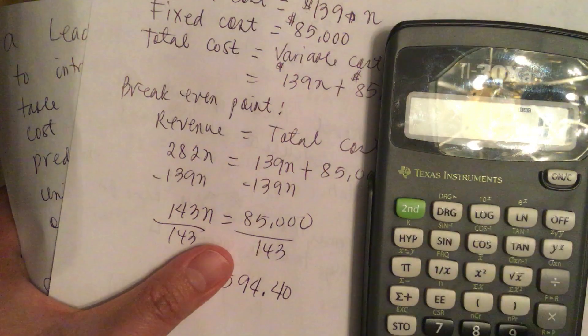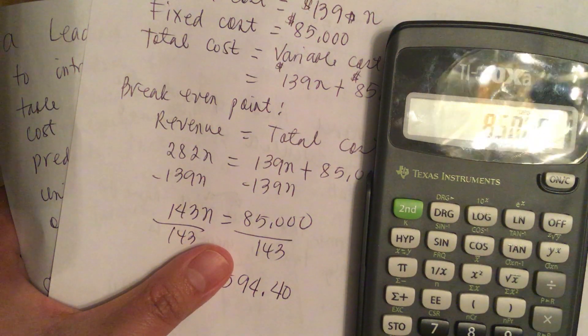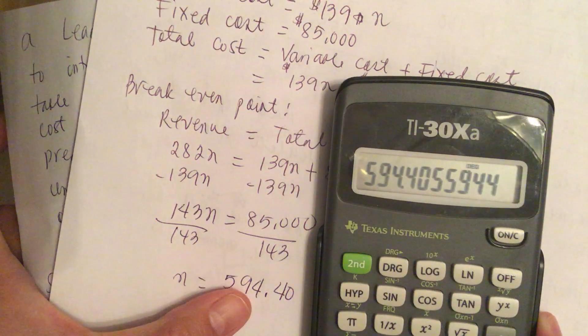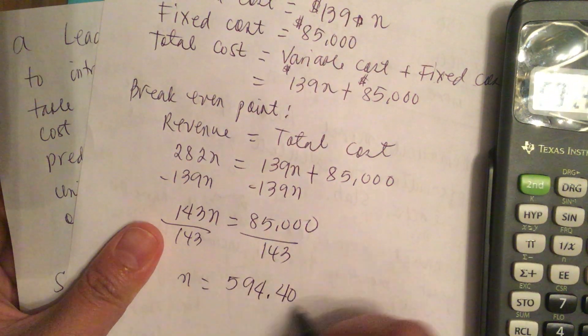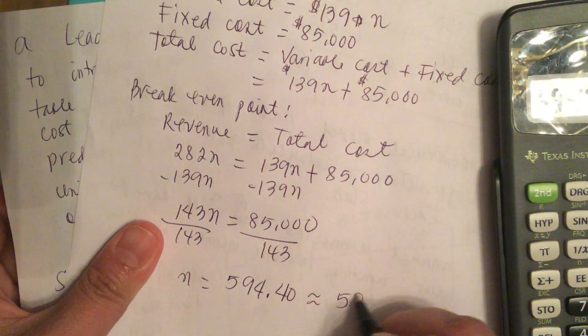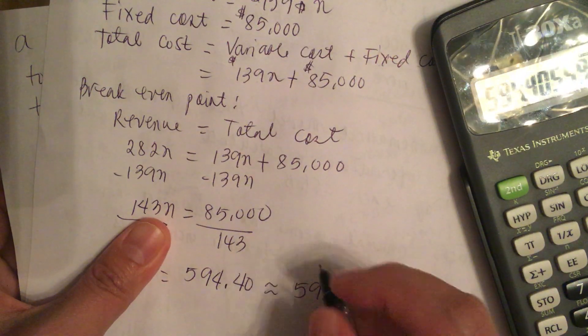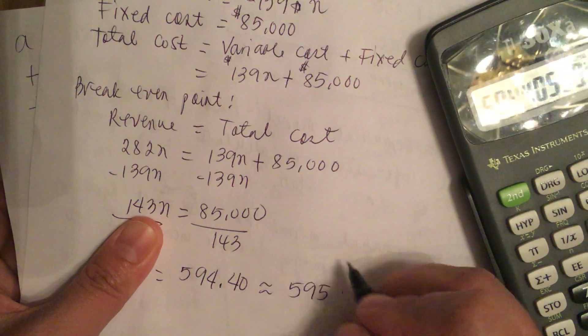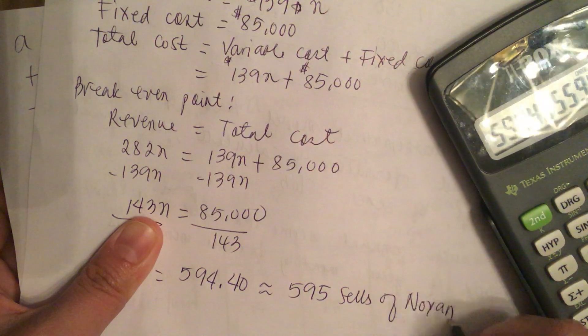So 85,000 divided by 143 is equal to 594.40 or 595 units, 595 sales of Noyan.